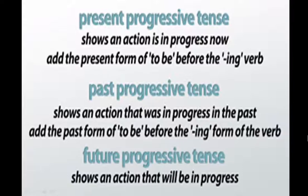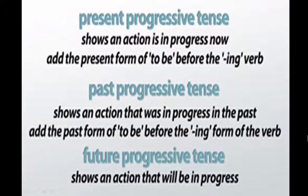First we will see what is present progressive tense. In this tense, it shows an action that is in progress now. Before adding the -ing verb, we should add the present form of 'to be'. The second one is the past progressive tense. In this tense, it shows that an action is in progress in the past. Before adding -ing, we should add the past form in the sentence.